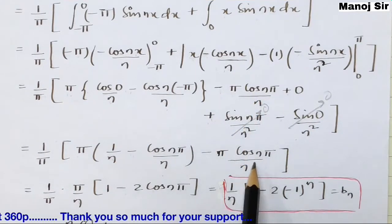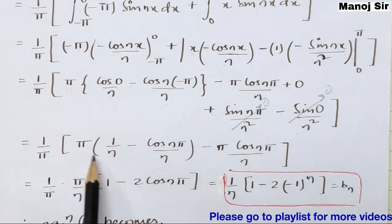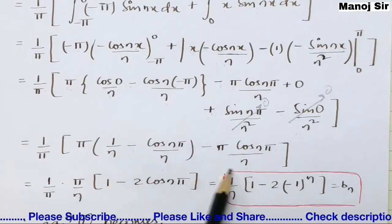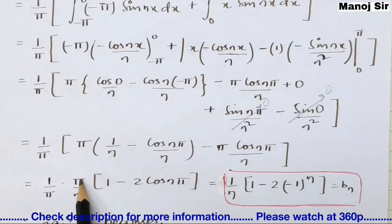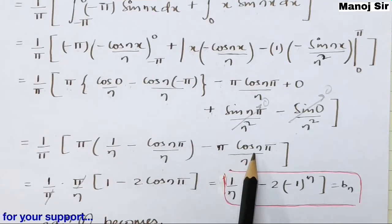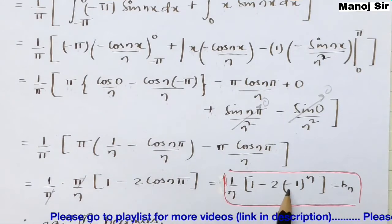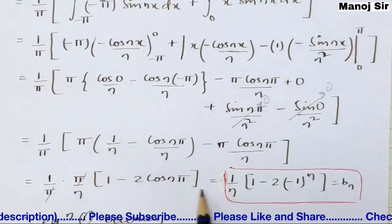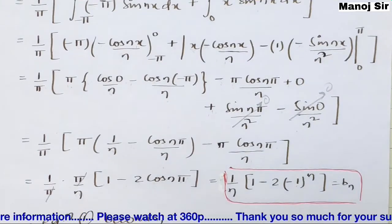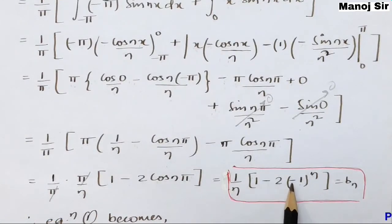Taking π/n common from all terms — π cancels with the outer 1/π — and using cos(nπ) = (-1)ⁿ, we simplify to: bₙ = (1/n)[1 - 2(-1)ⁿ]. This is the value of bₙ.